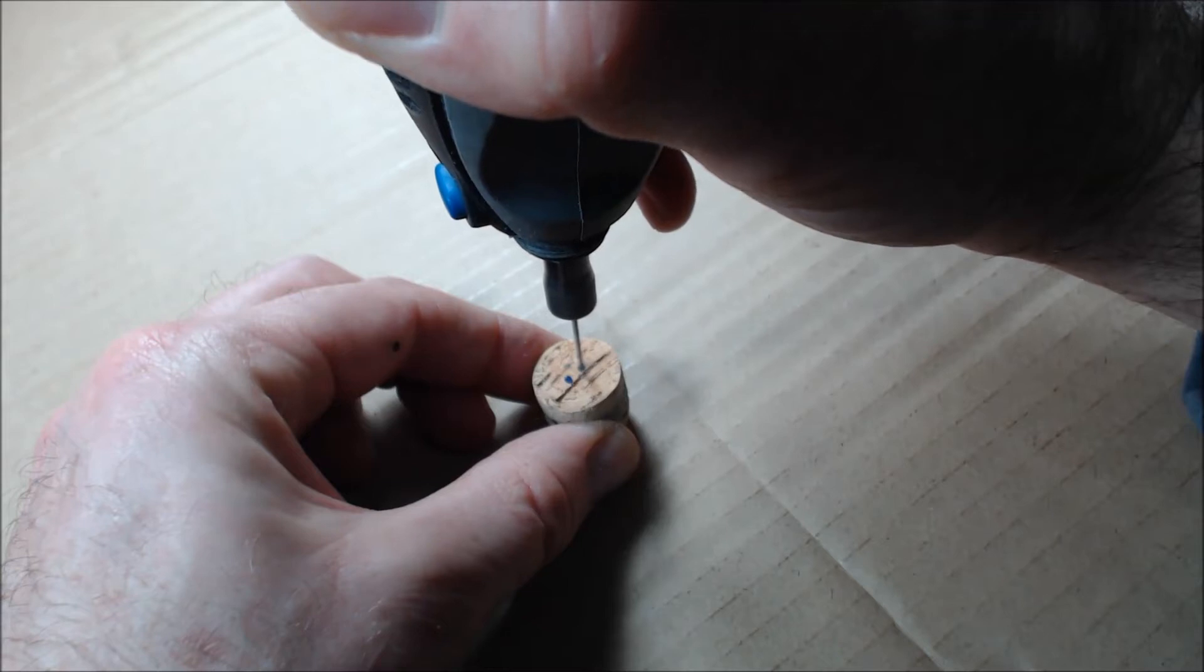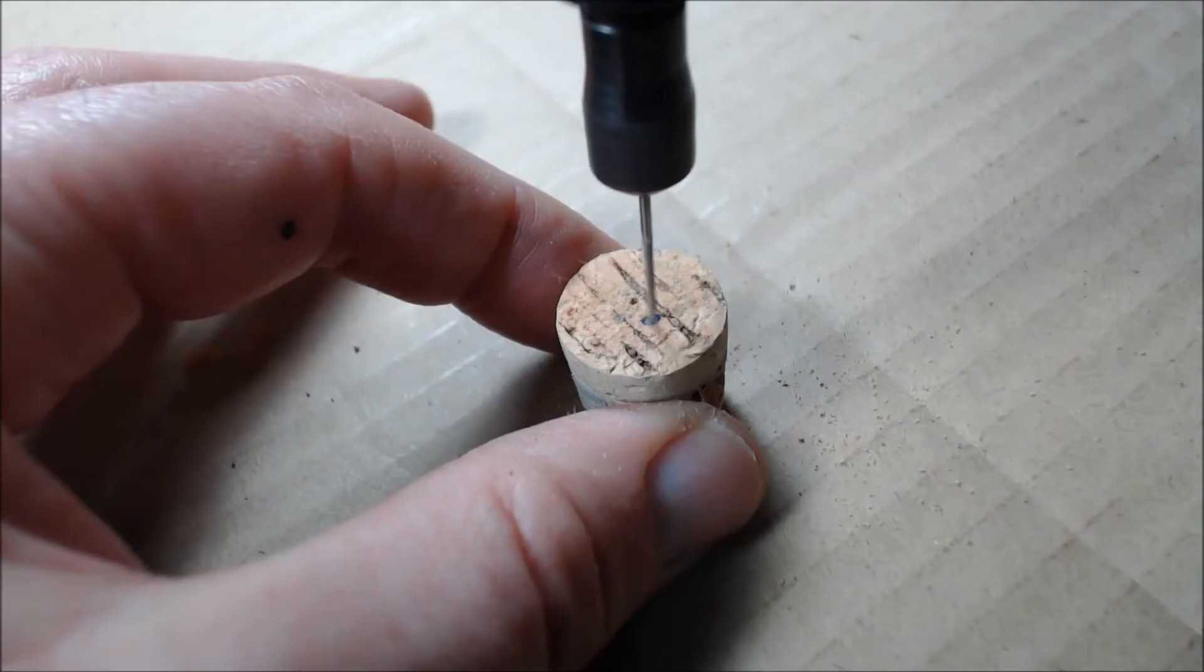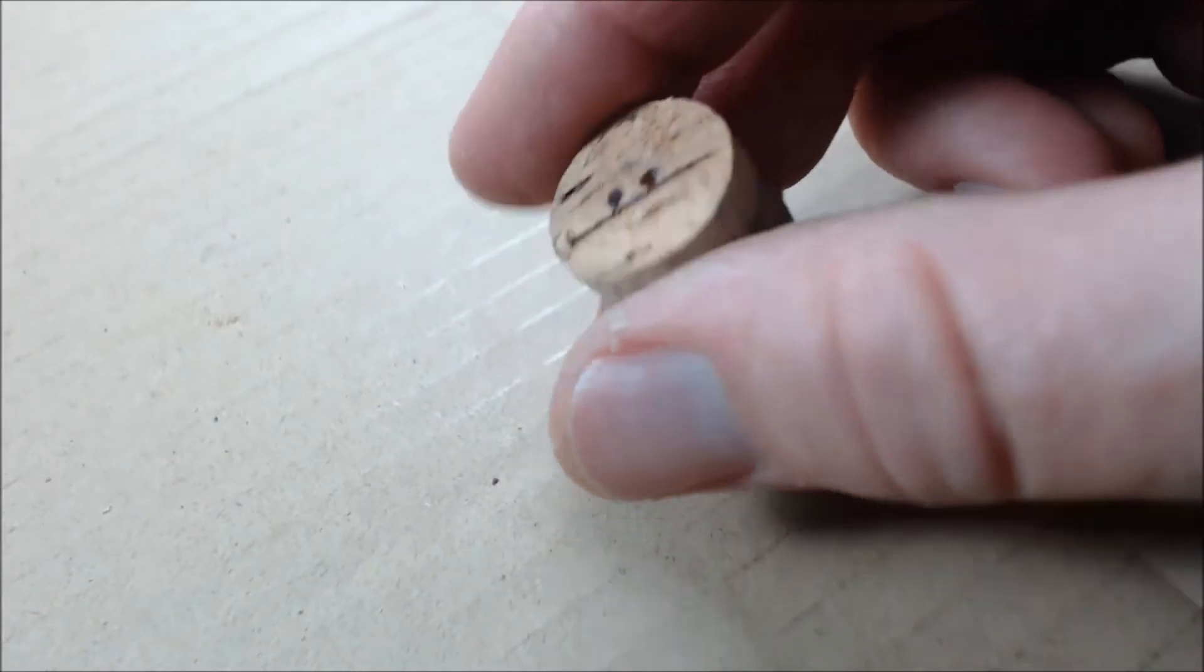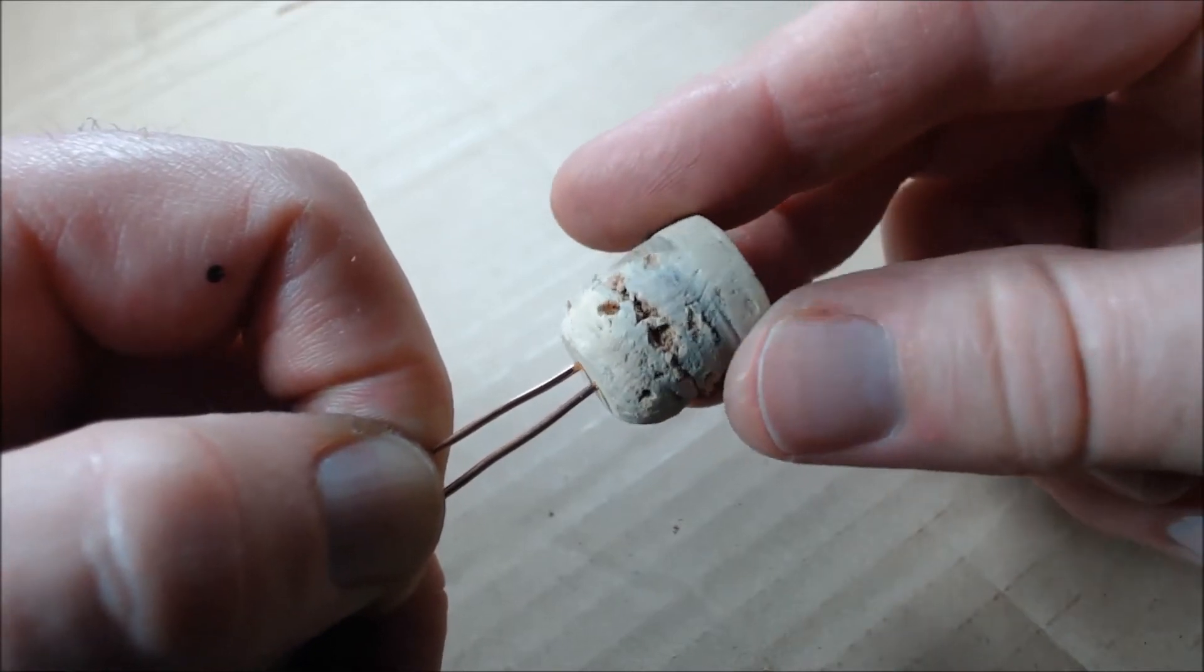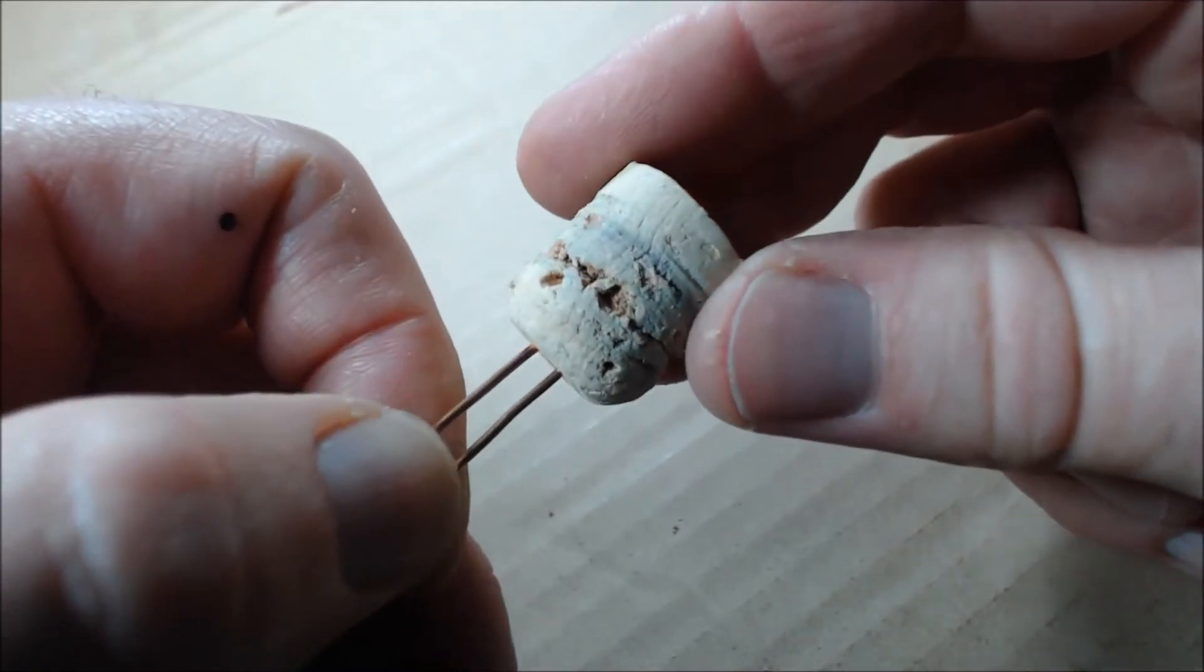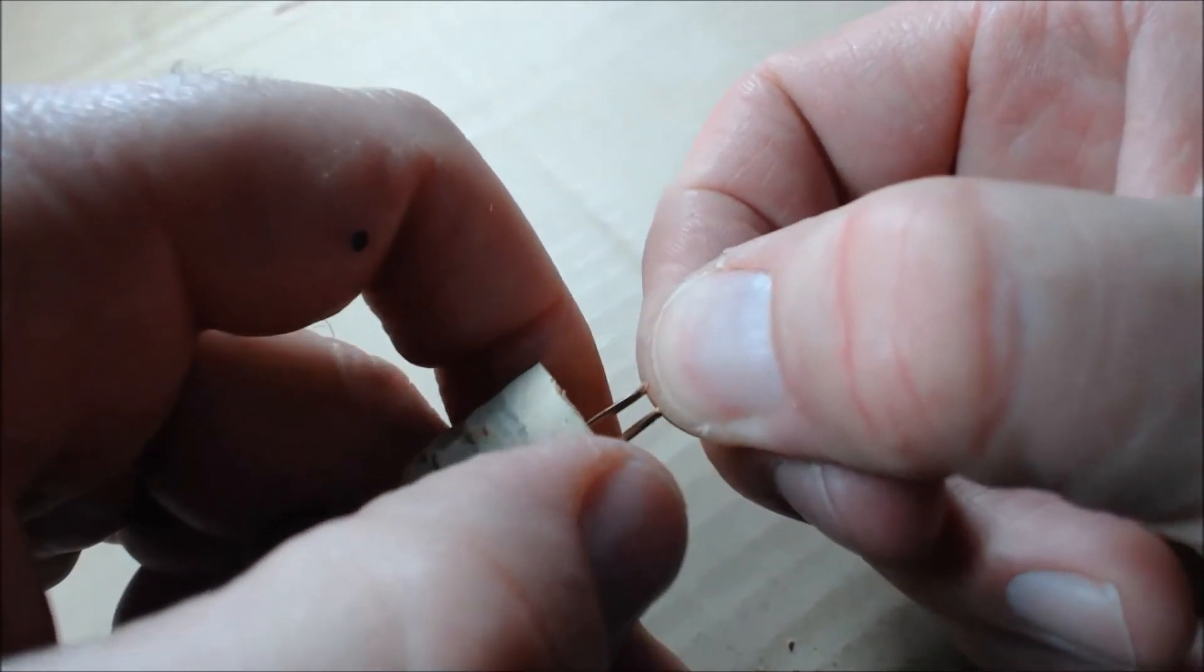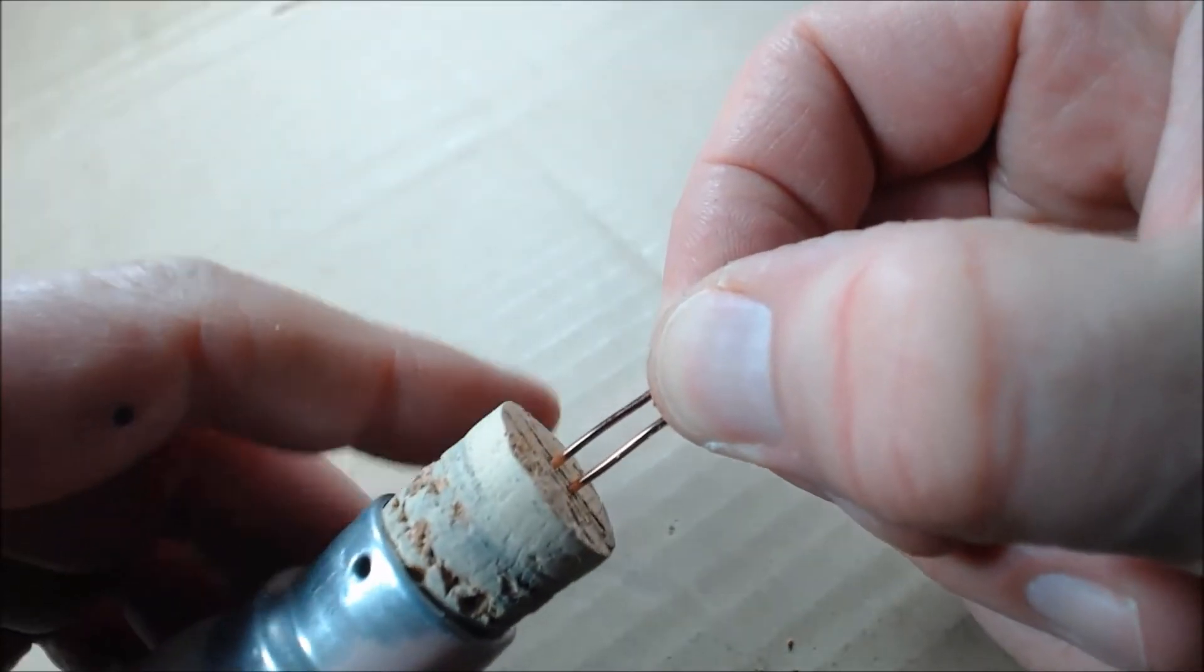The base of the bulb is made from a cork with two holes drilled through it to mount the LED heart. I used a dremel with a 1mm drill bit. Carefully push the stiff wires from the LED heart through the cork, and then push the cork into the base of the light bulb.